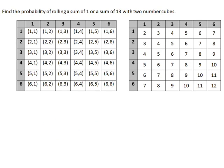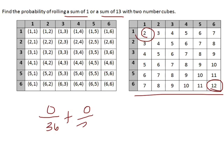Now we're going to find the probability of rolling a sum of one or a sum of thirteen. You can't have both at the same time, so these are clearly mutually exclusive. But looking at the table of sums, I see there is no sum of one — the smallest sum is two — and there is no sum of thirteen — the largest sum is twelve. So a sum of one is zero out of thirty-six and a sum of thirteen is zero out of thirty-six. Adding those gives zero out of thirty-six, meaning the probability is zero — you're never going to get it.